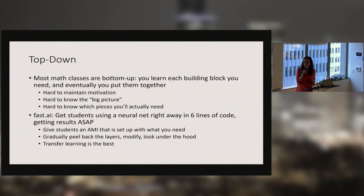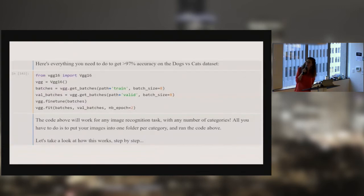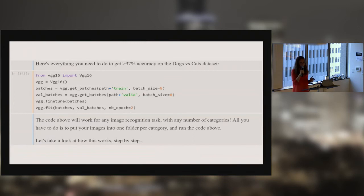We are huge fans of transfer learning — the technique where you take a pre-trained network trained on a different data set and problem and apply it to your problem, often retraining the last layer or the last few layers. It's really powerful because it lets people with smaller data sets and limited computational power take advantage of networks trained elsewhere. From lesson one, it's six lines of code and it gets you better than 97% accuracy on dogs versus cats, which has been a Kaggle competition twice. Here we're using VGG, the ImageNet winner in 2014, and just retraining the last layer.